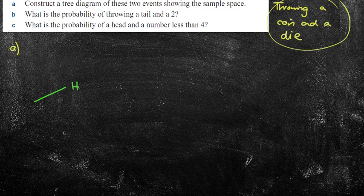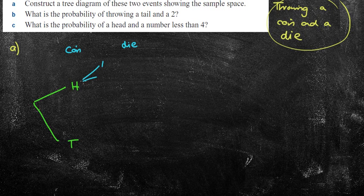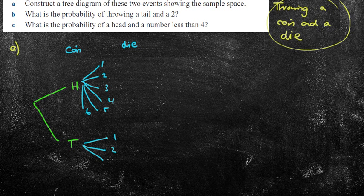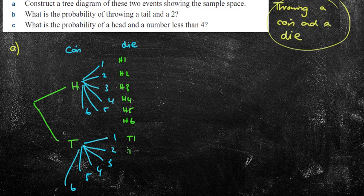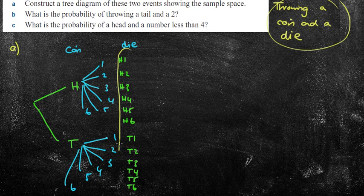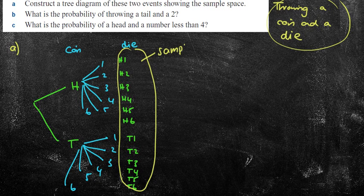I've got heads there, and I've got tails here. That's my coin. And now I'm going to throw my die. So I've got a 1, 2, 3, 4, 5, and a 6. Now, it's a dice, and I wouldn't really do that. I'd use a table, but that's okay. They've told us to use a tree diagram, and it says showing the sample space. So head 1, head 2, head 3, head 4, head 5, head 6, tail 1, tail 2, tail 3, tail 4, tail 5, tail 6. Now, those numbers there, they are what we refer to as the sample space. They're all our outcomes.